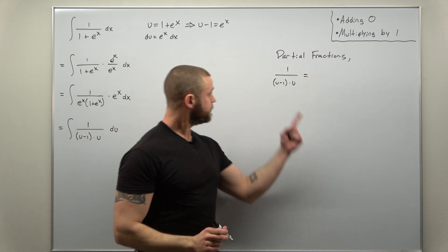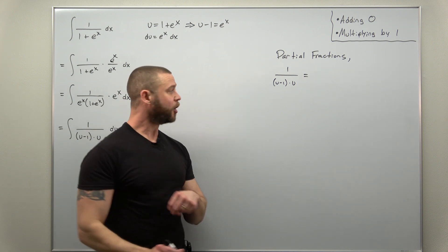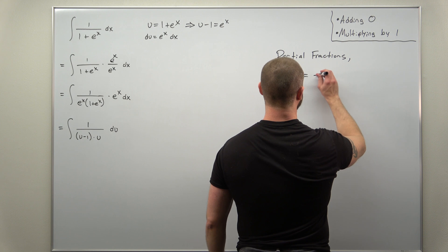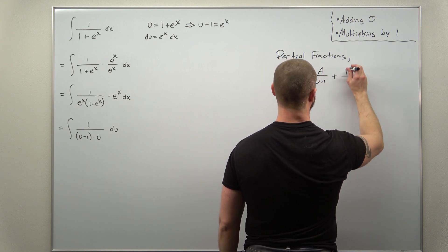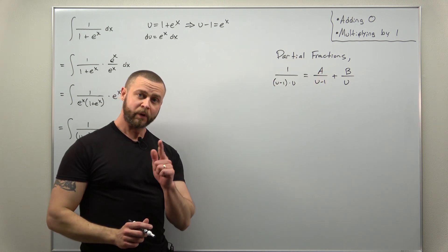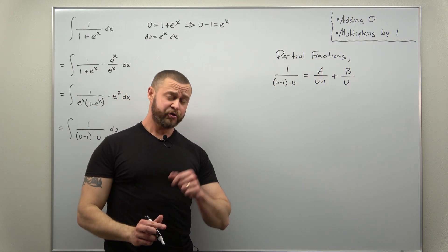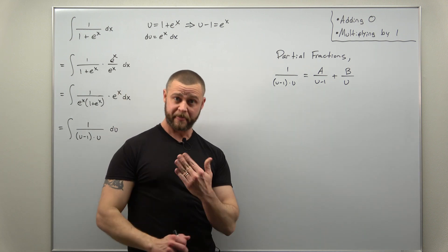A over u minus one and then B over u. Make sure you're comfortable doing partial fraction decomposition where you have a different variable here, u instead of x.